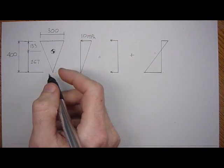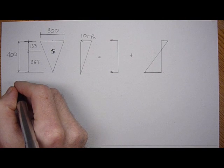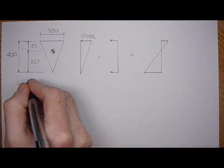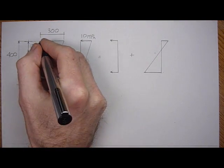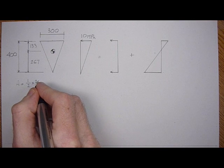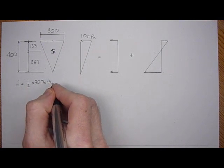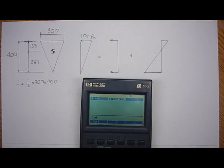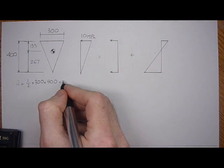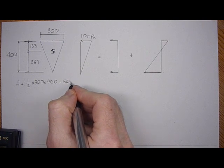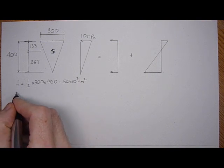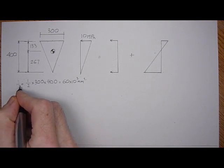So the first properties we need are the gross area and gross inertia. And the area of the triangle is straightforward. It's one half of the base times the height, 300 times 400. 0.5 times 300 times 400. That's 60 times 10 to the third. And the inertia, that's the area gross, the inertia gross,